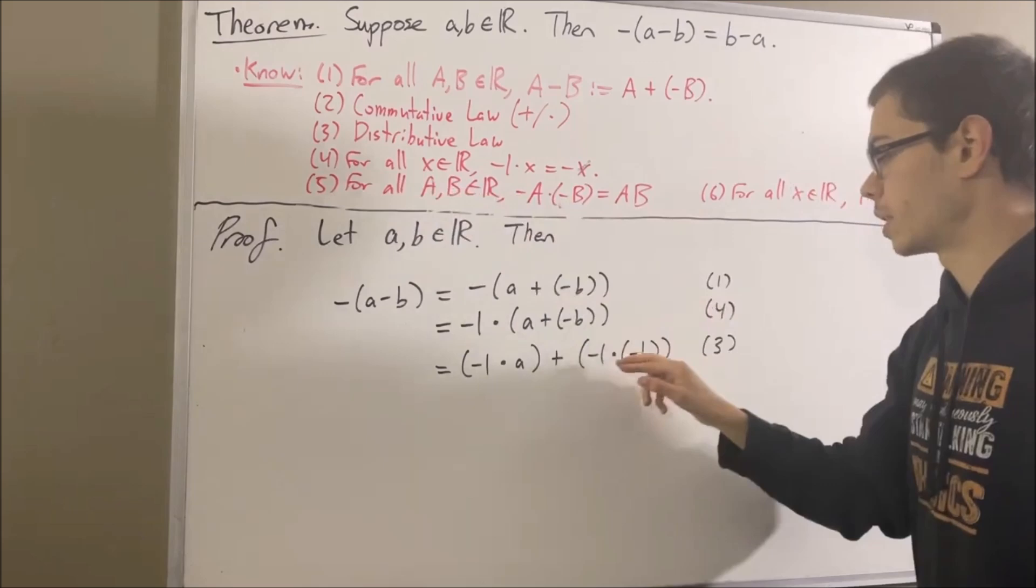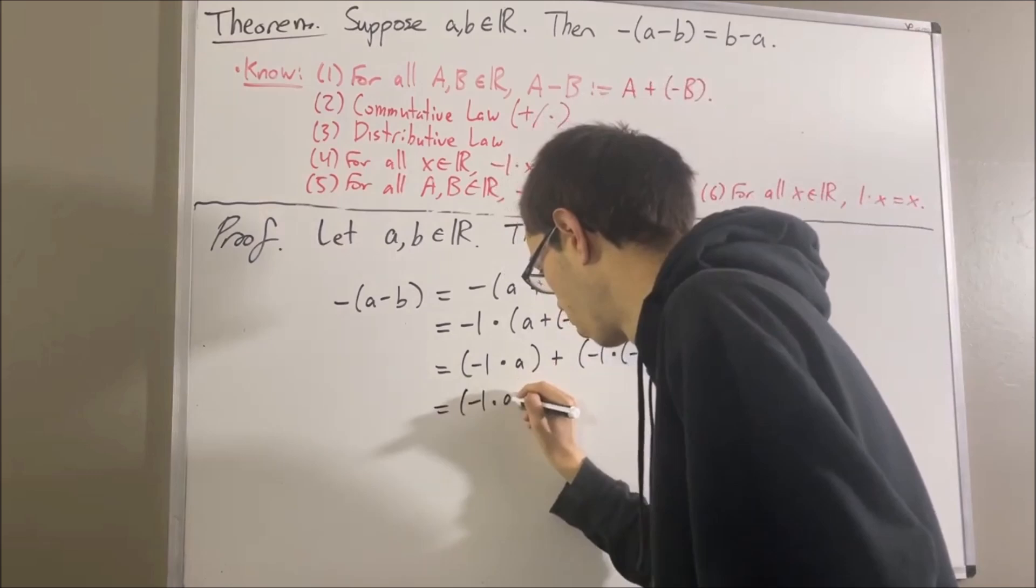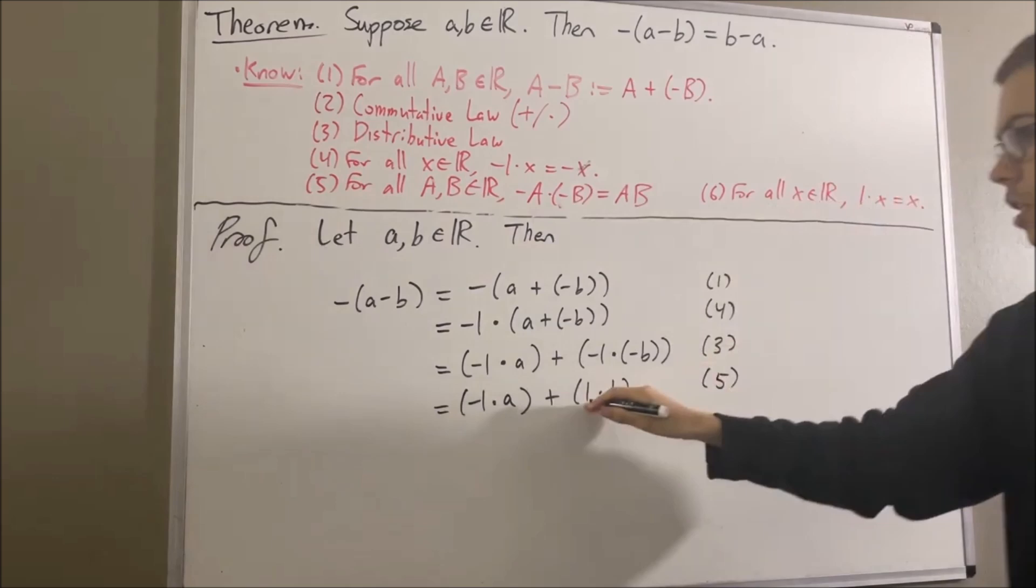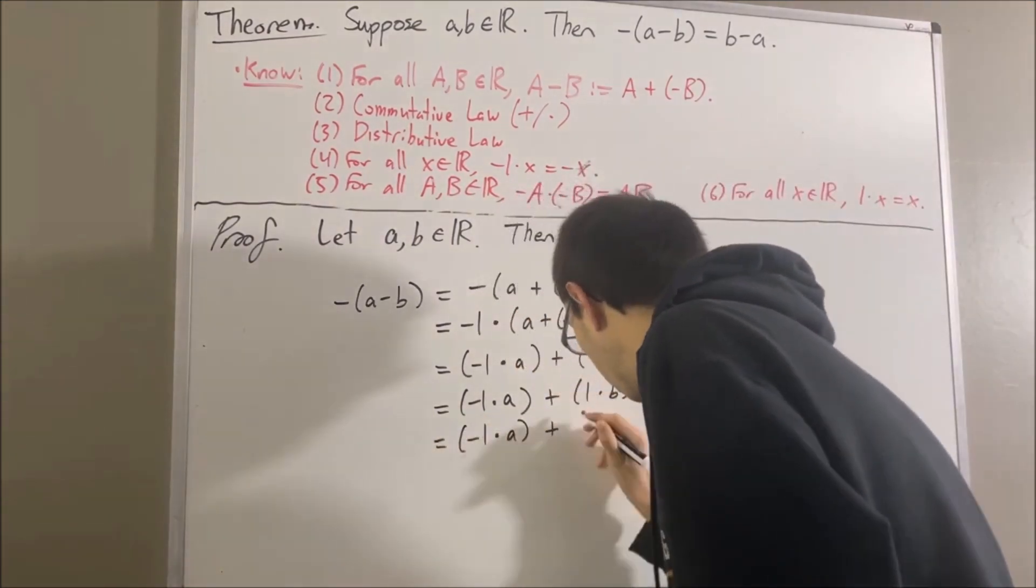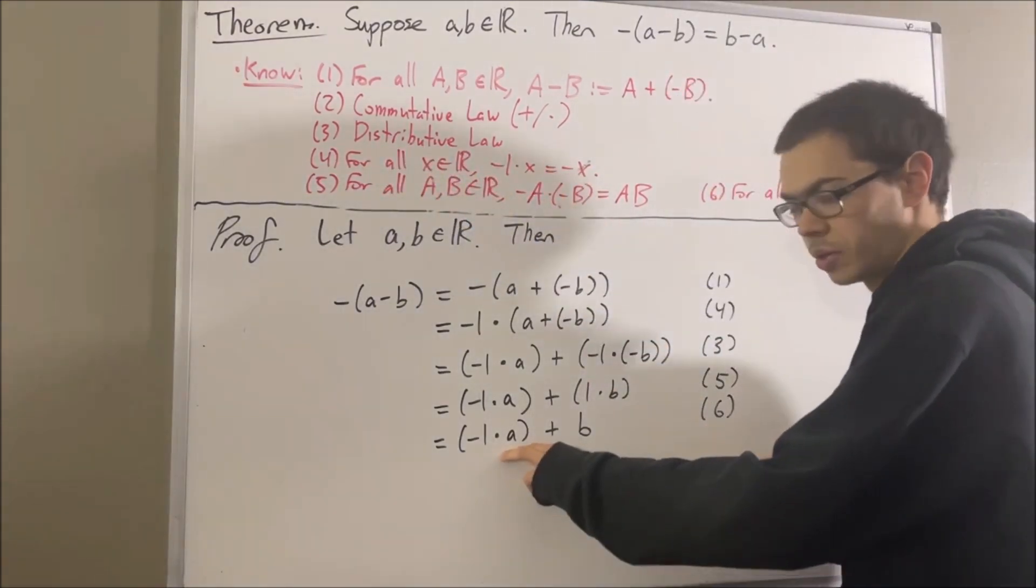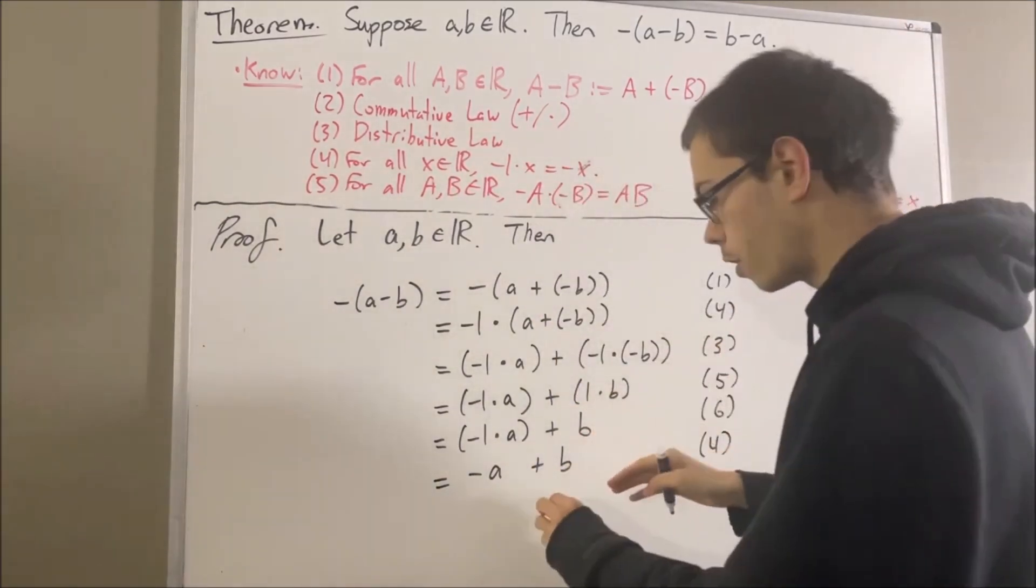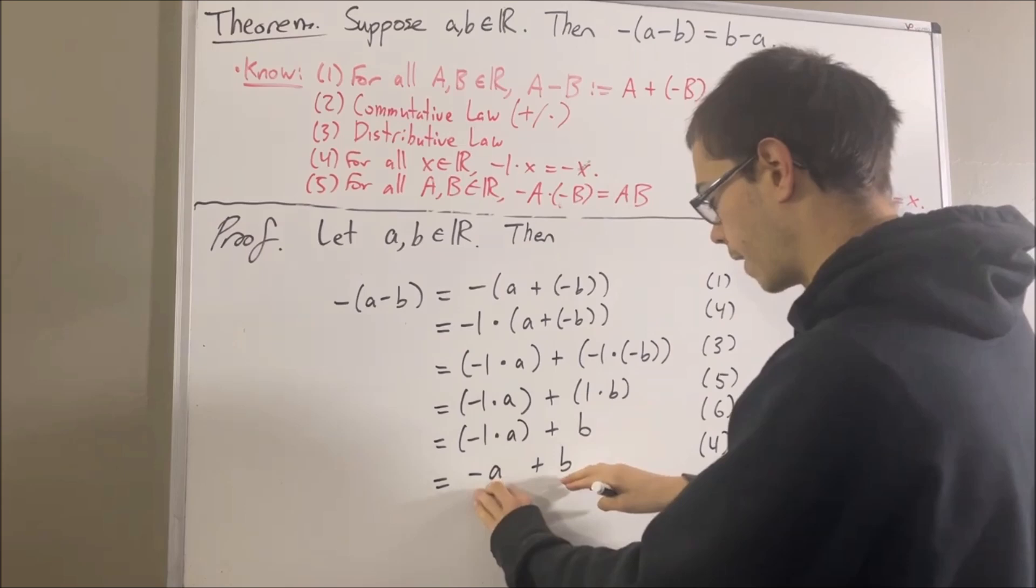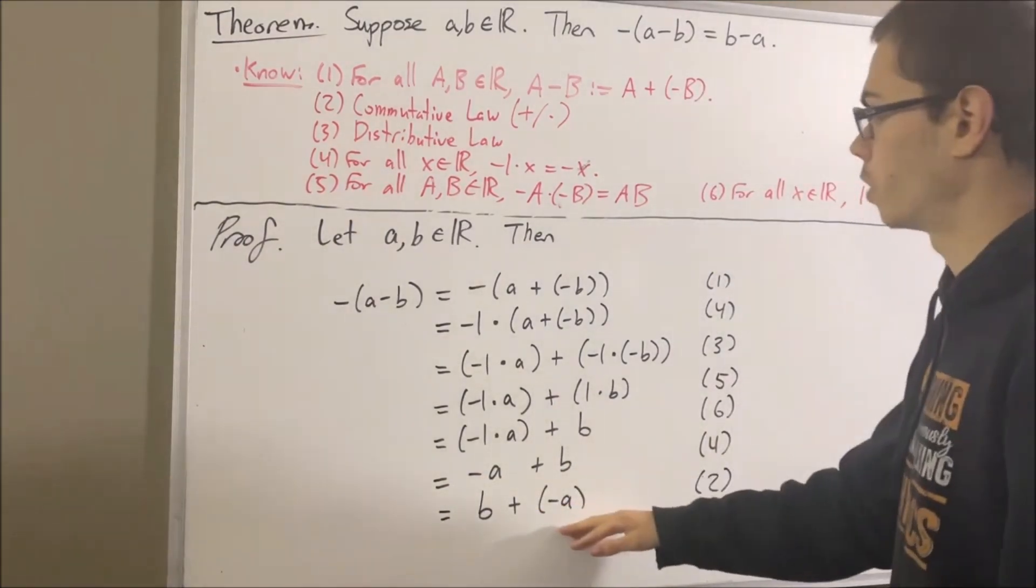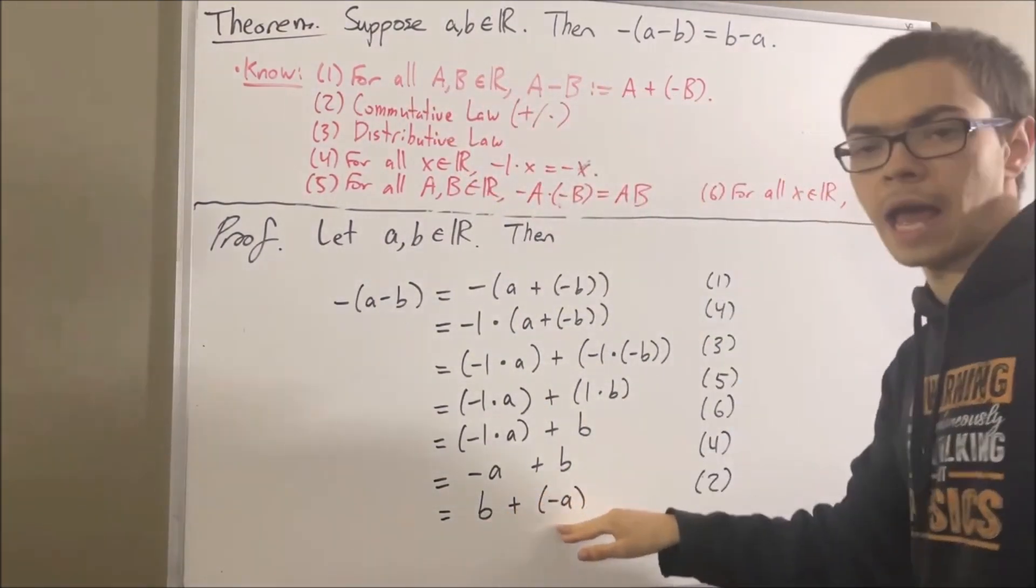From fact number five, we know that negative 1 times negative B is equal to 1 times B. And from fact number six, we know that 1 times B is equal to B. From fact number four again, we know that negative 1 times A is equal to the negative of A. Next, we're going to apply the commutative law to swap negative A and B around. And at this point, we can go back to the definition of subtraction and rewrite B plus the negative A as B minus A.